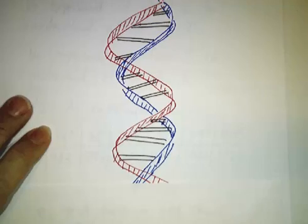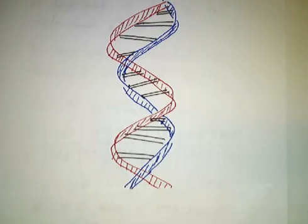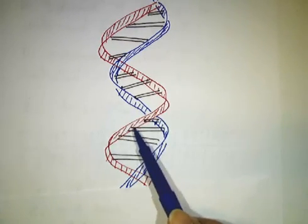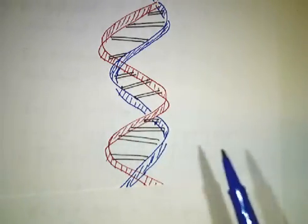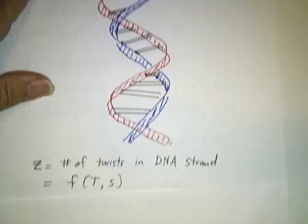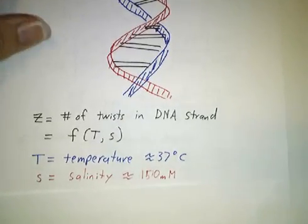Suppose you have some DNA and you know that DNA is a double helix, it twists around, but what you might not know is the amount that it twists, the number of base pairs per turn around, is not constant. It's actually a function of temperature and salinity.